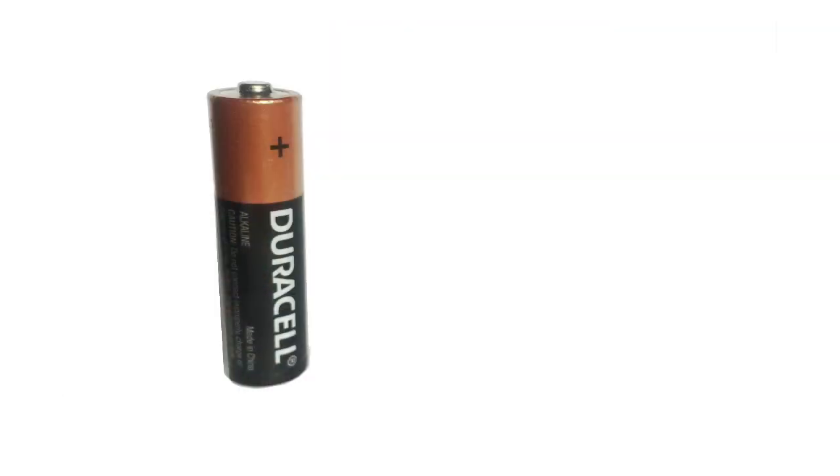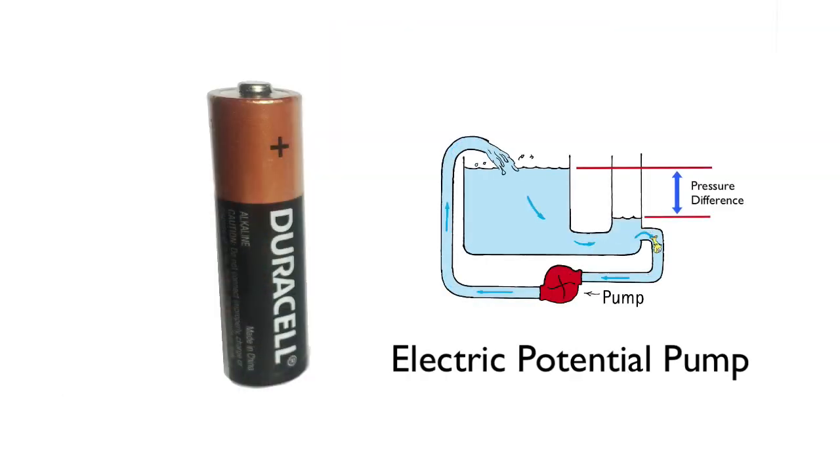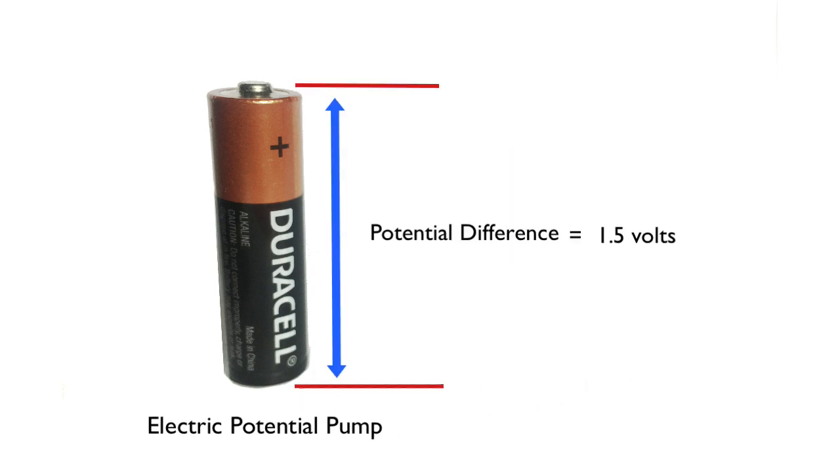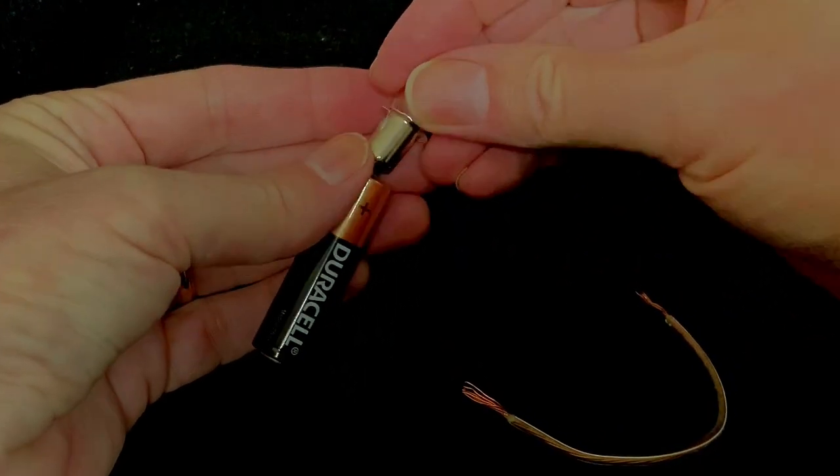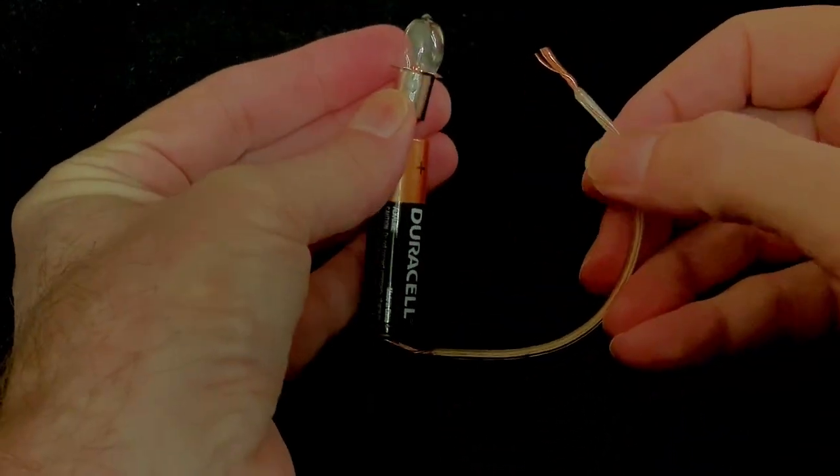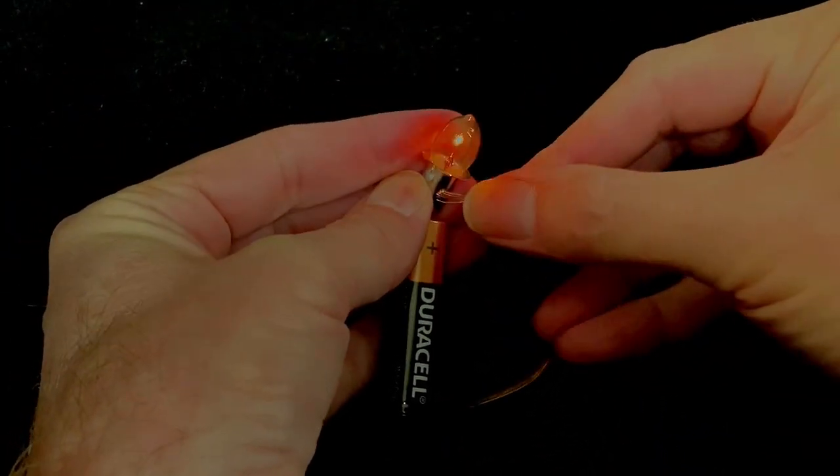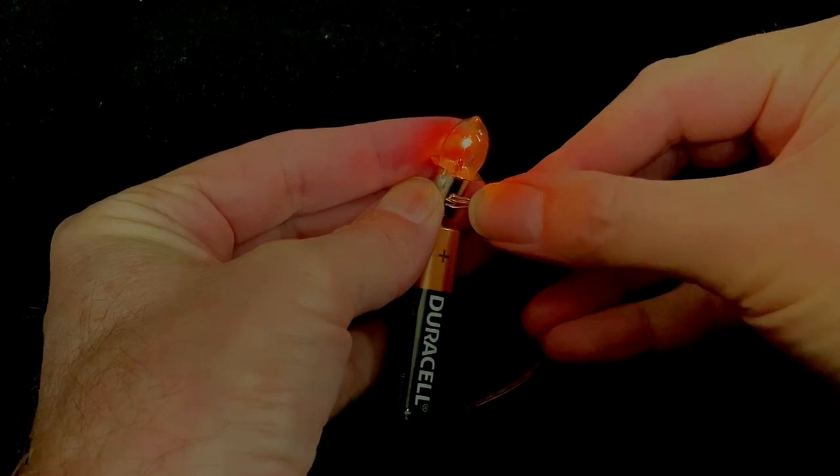A battery works as an electric potential pump. Chemical reactions within this battery assure that one side remains 1.5 volts higher than the other. Connect the two ends with a wire and charge will flow through the wire up until the chemical reactions have been depleted.